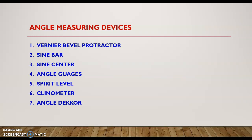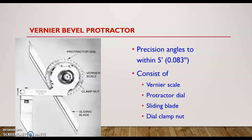These are some angle measuring instruments we are considering: first is the vernier bevel protractor, next is the sine bar, sine center, angle gauges, spirit level, clinometer, and angle dekkor. We start with the vernier bevel protractor, which is a precision angular measuring instrument having an accuracy of 5 minutes.